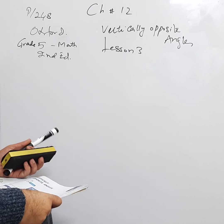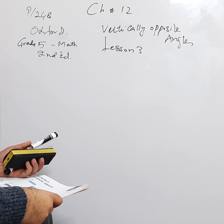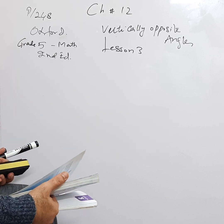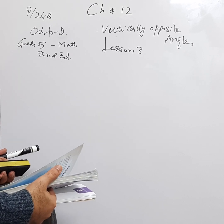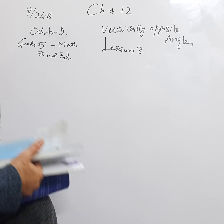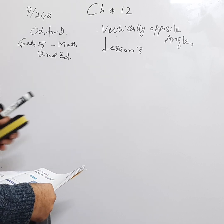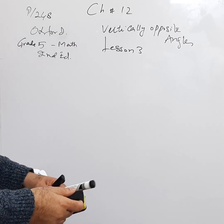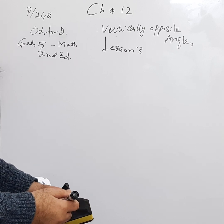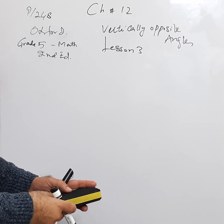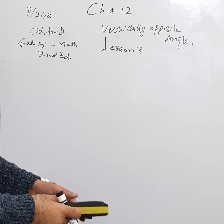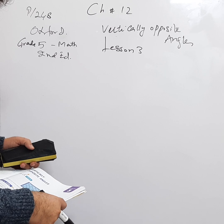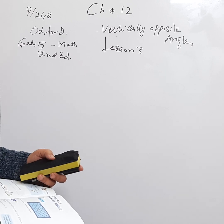Mani Rahim. We'll be doing lesson number three: Vertically Opposite Angles. This is on page 248. We are doing New Syllabus Primary Mathematics, Oxford, for class 5, secondary edition. We did lessons one and two, and now we are on lesson number three. Stay with us — if you find these videos useful, please like, share, and subscribe to the channel.